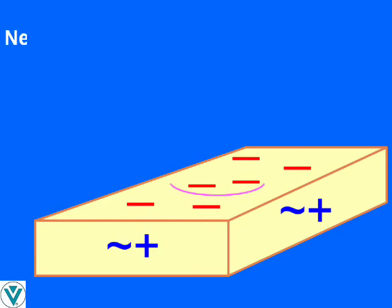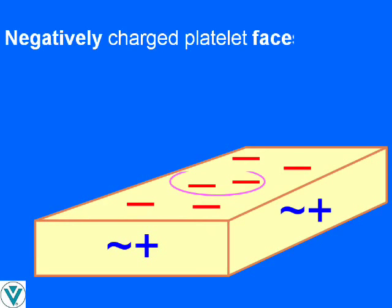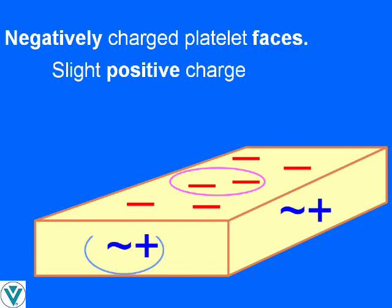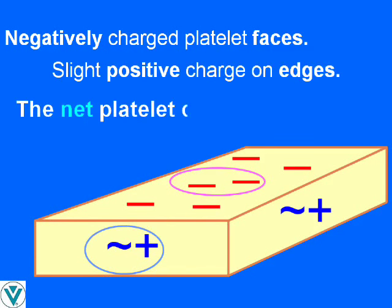Substitutions within the crystal lattice result in negatively charged platelet faces. Lattice discontinuities account for a very slight positive charge on edges. The net platelet charge is negative.